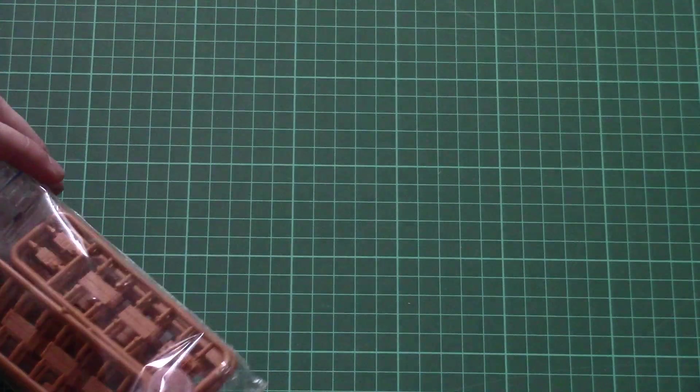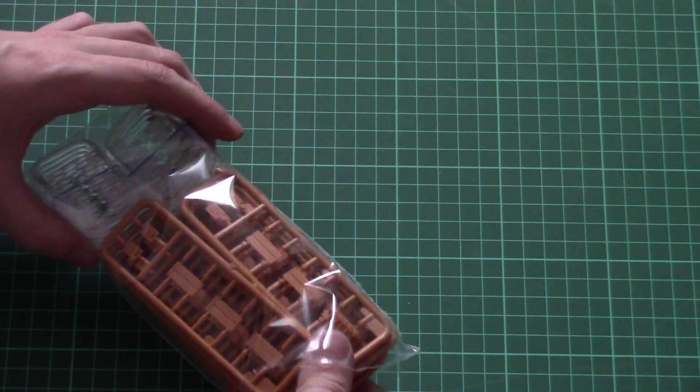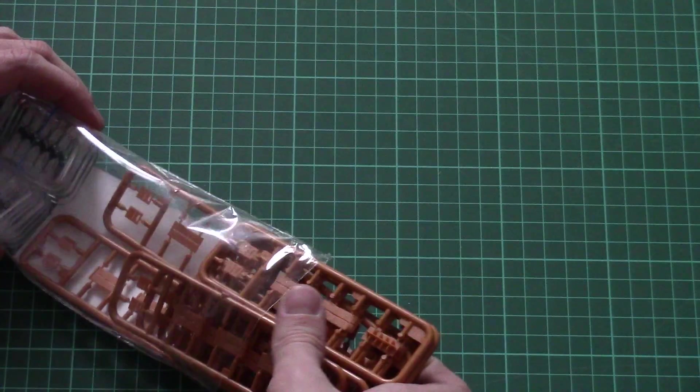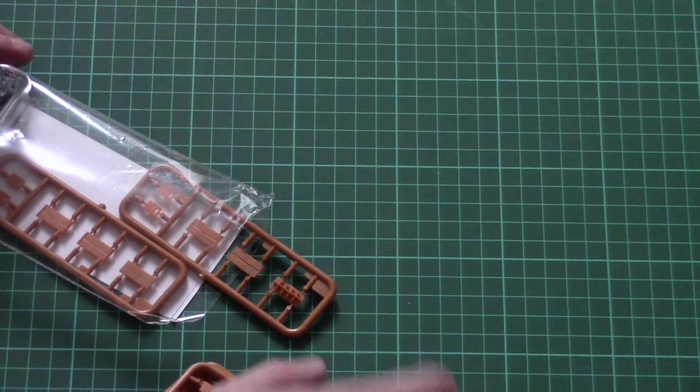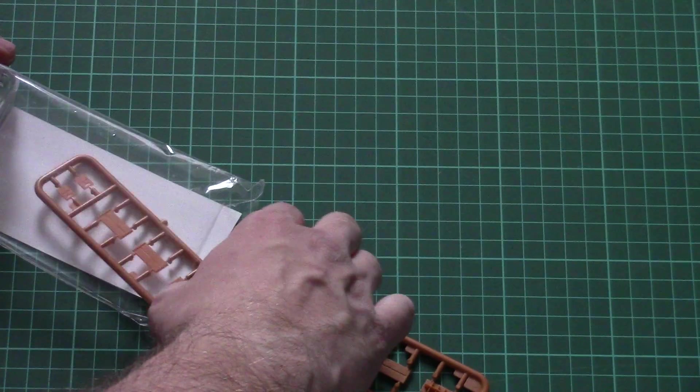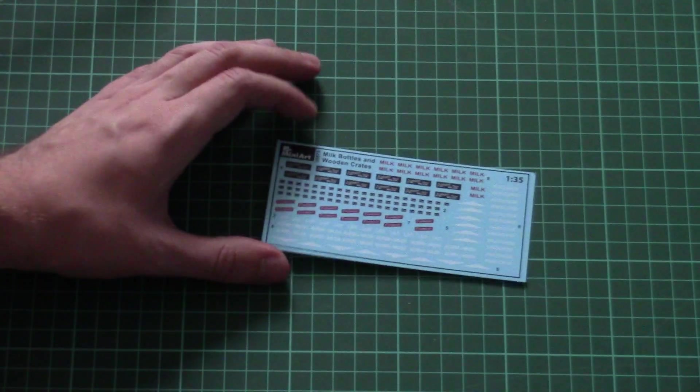So boxes will be copied with help of those dark brown plastic frames. You can see them here. All those plastic frames are absolutely identical, so I will show you one. But first I want to show you the decals sheet.